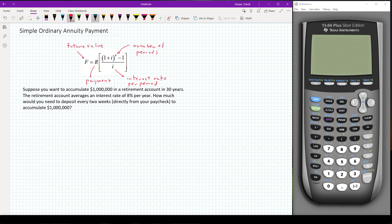So the first thing we need to realize is that when they tell us we want to accumulate a million, that's what we want in the future. So I'm going to set F equal to one million. I'm looking for the payment, so R is unknown. And then I can put all the quantities in that I know inside of the brackets. So we have one plus I, our interest rate is 8%, but I'm doing it every two weeks. So that means 26 times a year. So I'm going to divide that by 26.